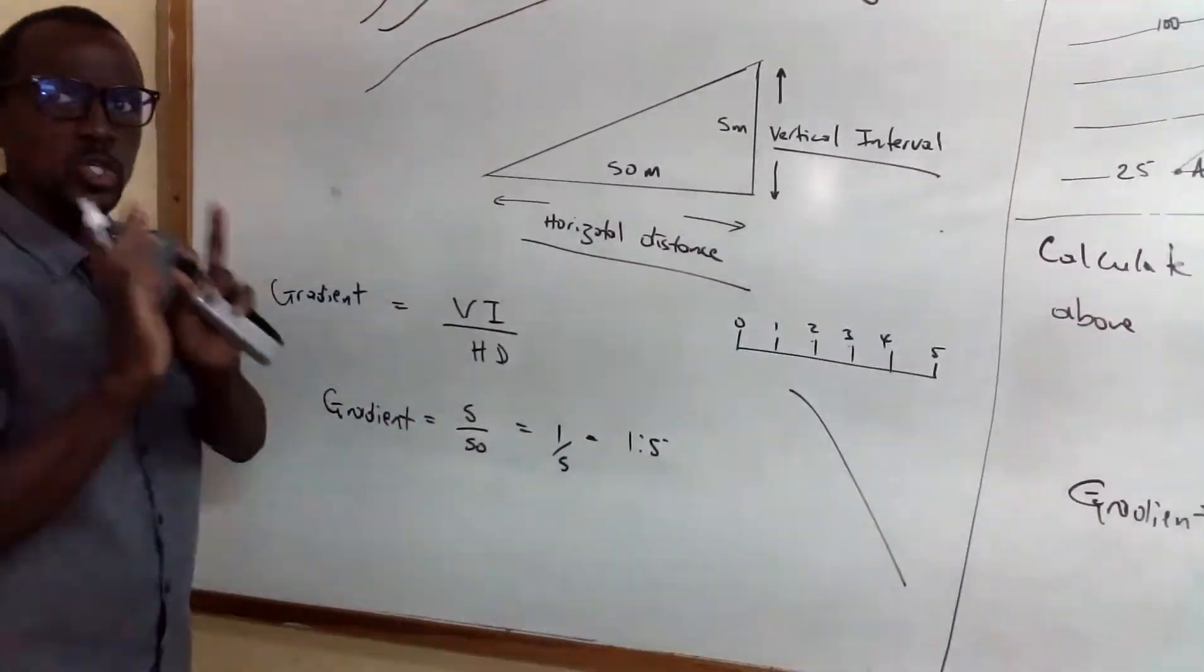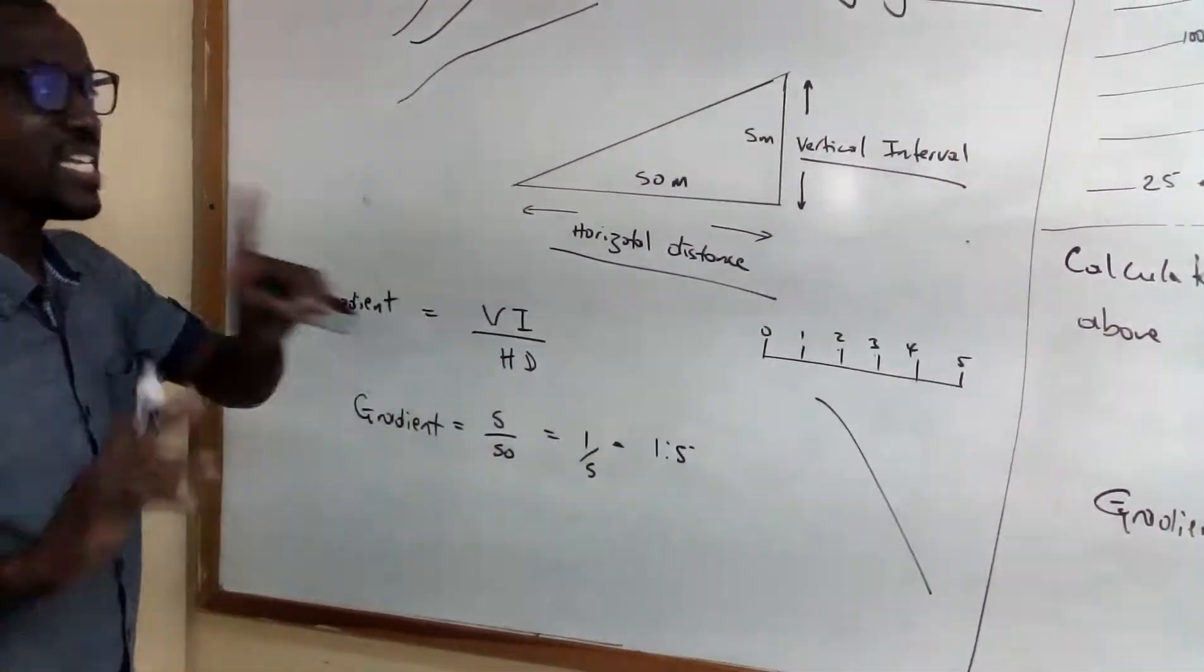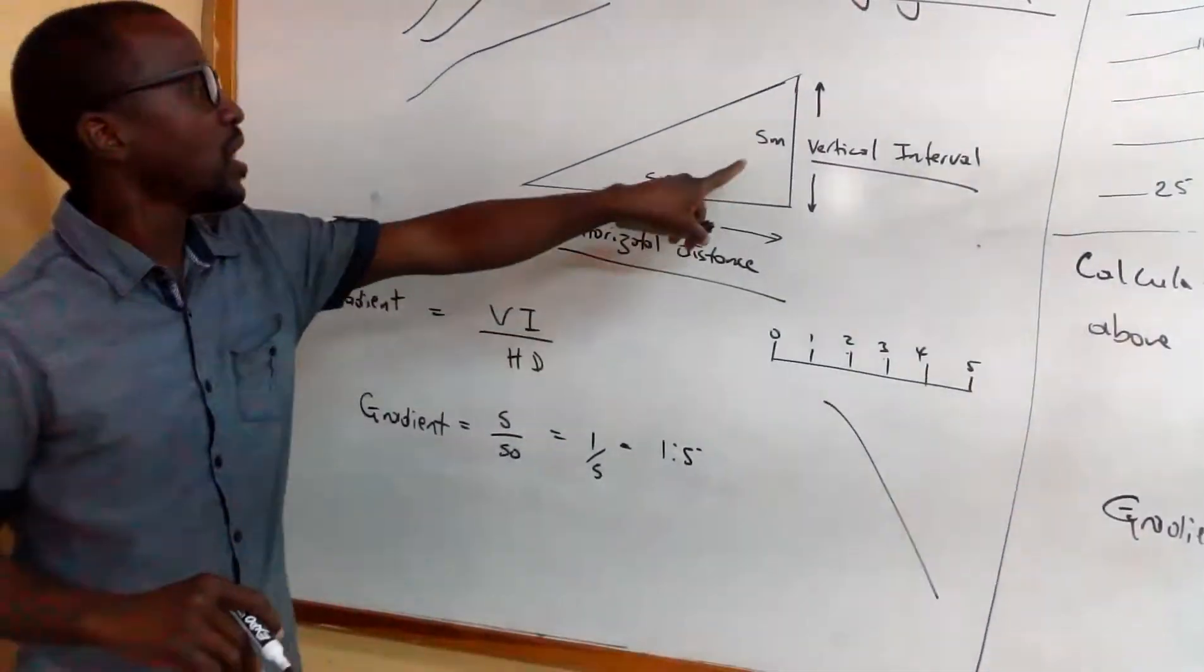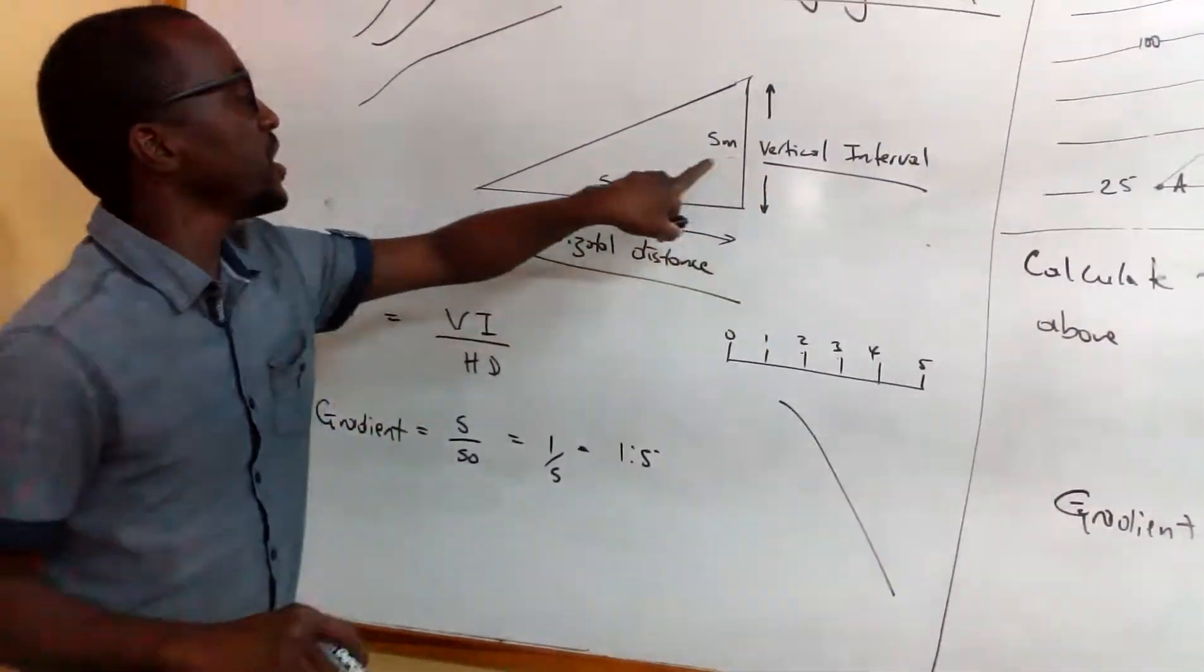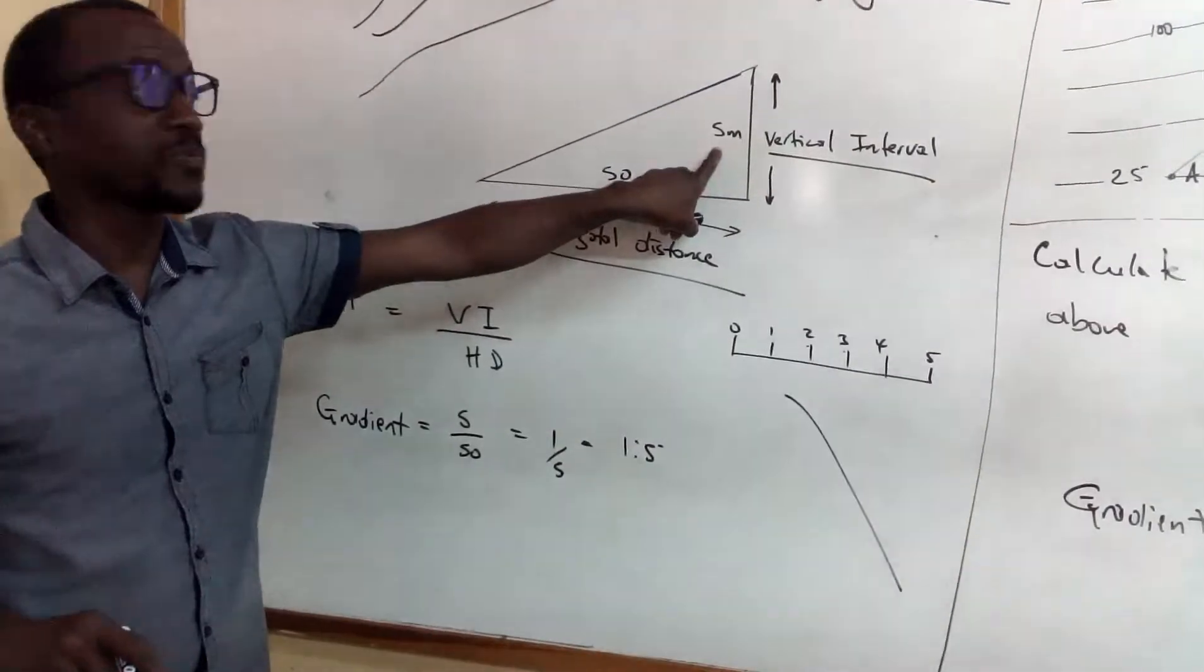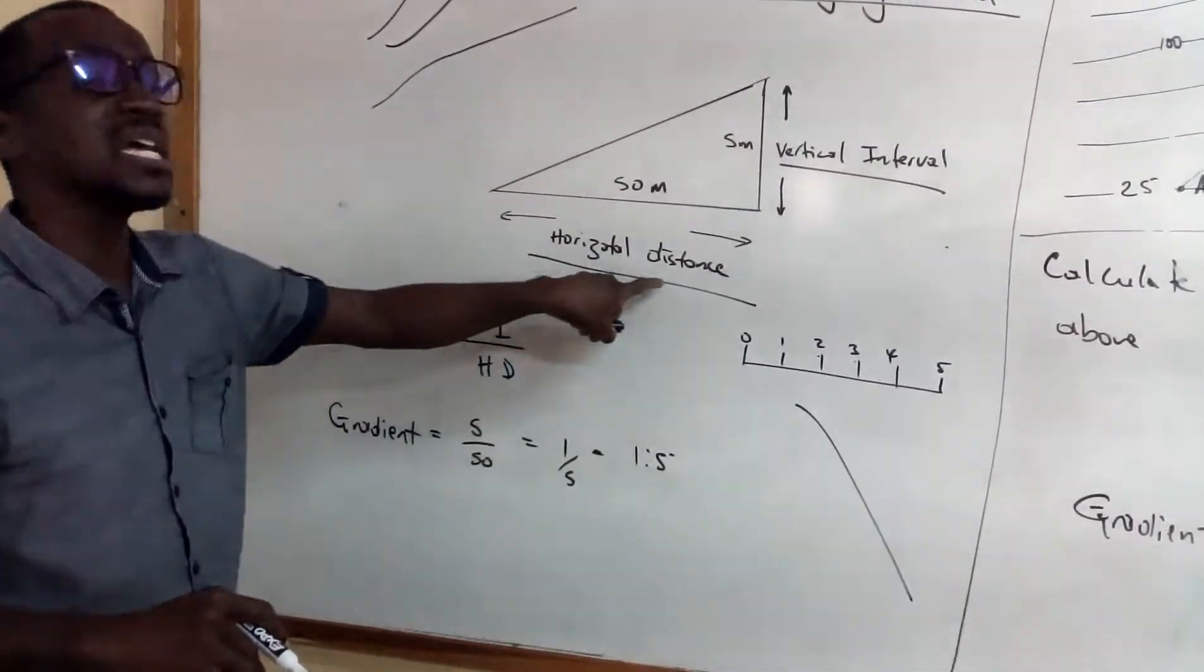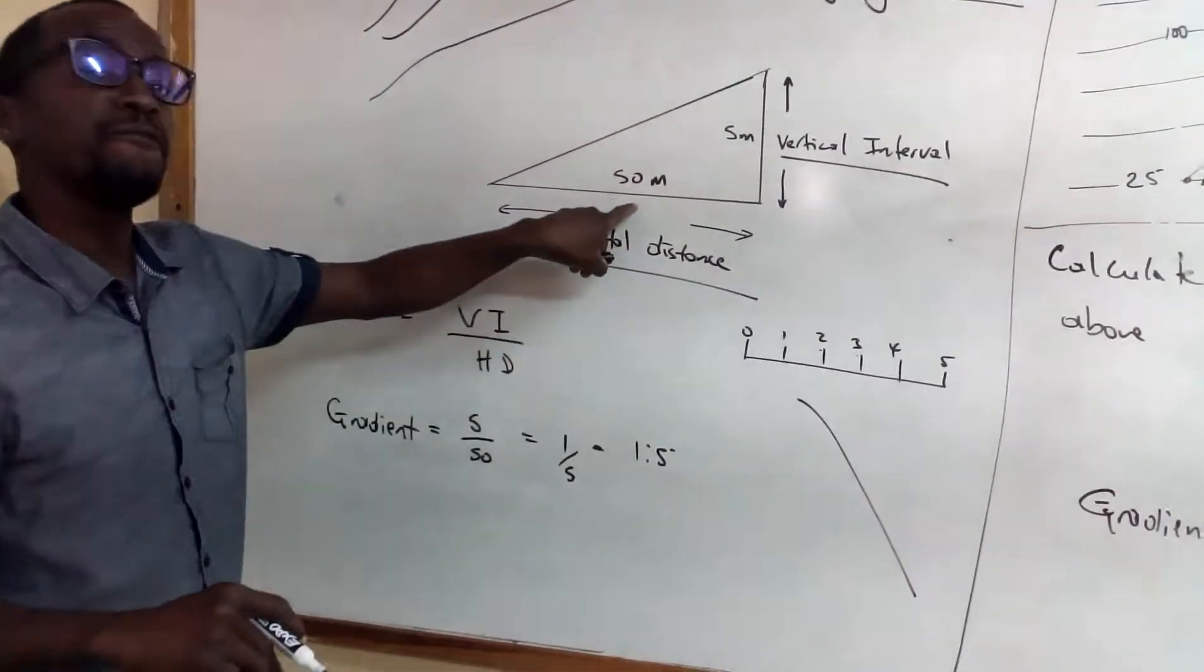So how do you do that? In this case, this is an example. The vertical interval equals 5 meters. The horizontal distance is equal 50 meters.